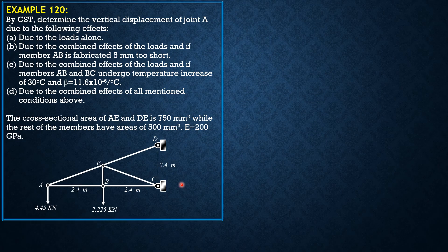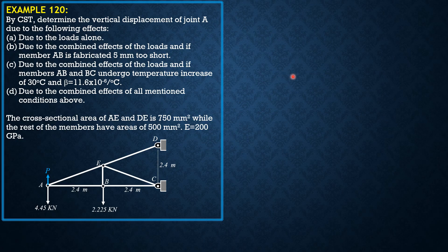Because we have to apply Castigliano's second theorem, we apply an upward force P at A. This is similar to the virtual work method where we apply one unit load upward and use the formula: 1 × delta = summation of UDL/AE. For Castigliano's second theorem, the formula is summation of S × (∂S/∂P) × L/AE. It's the same except that U in virtual work is replaced by ∂S/∂P in Castigliano's second theorem.